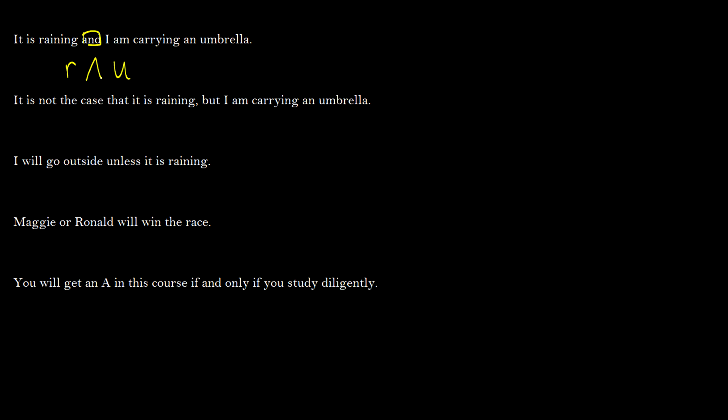What about 'It is not the case that it is raining, BUT I am carrying an umbrella'? We have the word BUT, and you have to use your English skills to figure out what it means. Does it mean NOT R OR U? That doesn't quite make sense — it implies NOT R AND U. BUT really just means AND. In linguistics, BUT carries a contrastive sense, but in propositional logic there is no difference: BUT equals AND. So this is ¬R ∧ U.